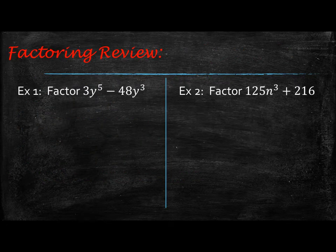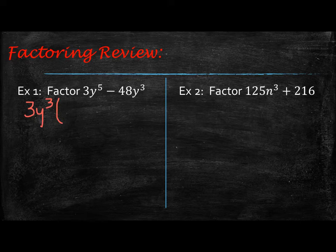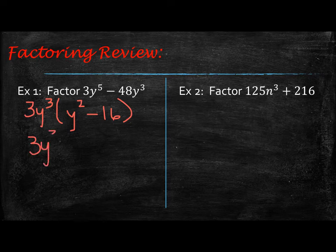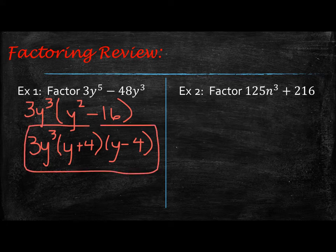Let's review factoring. For 3y⁵ - 48y³, you have a common factor of 3y³. Dividing that out leaves y² - 16. That y² - 16 is a difference of squares, so it factors to (y + 4)(y - 4). That's as far as you can go. Since we're just factoring, we stop there. If I was solving, I would take it one step further and set each factor equal to zero.